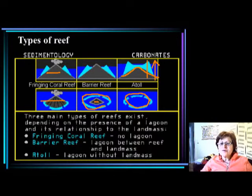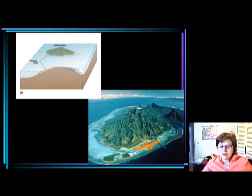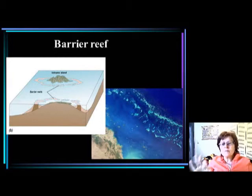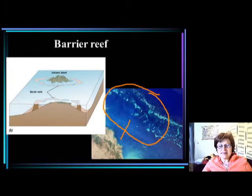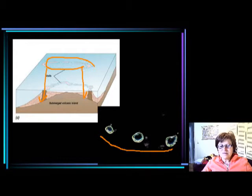Here is a picture of the fringing reef — you can see how the coral reefs are growing right next to the land, so you can basically walk into the water to snorkel. This here is the barrier reef, like the Great Barrier Reef. The most important, most diverse, most beautiful reef is the Great Barrier Reef of Australia — that's my dream place. And the last one is the atoll, where you don't see land, just the ring of corals, but underneath there is land where the coral started to grow.